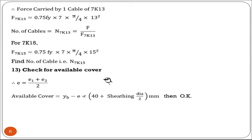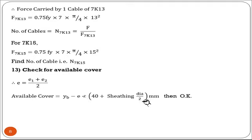Next is the check for available cover. We generally check this at midspan; at the support there is no problem. E = (E1 + E2) / 2. Available cover = YB − e (eccentricity). This should not be less than the clear cover plus sheathing diameter / 2 — i.e., the total diameter of the cable. If this is satisfied, the cover check is okay.